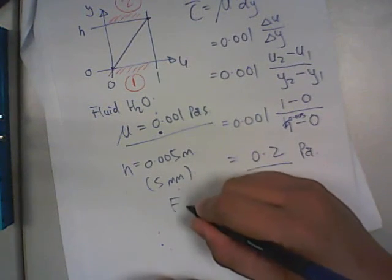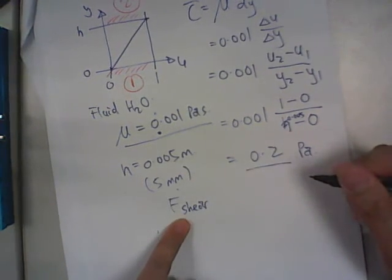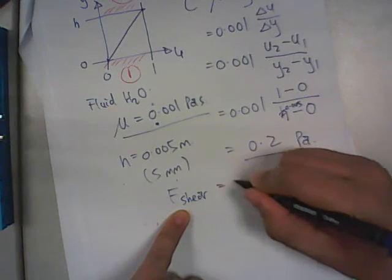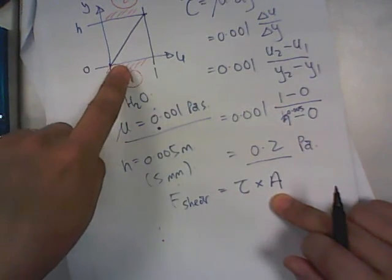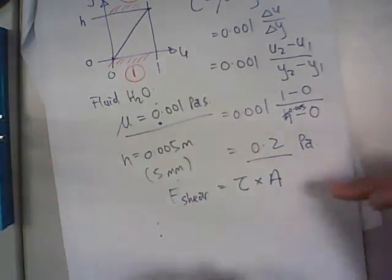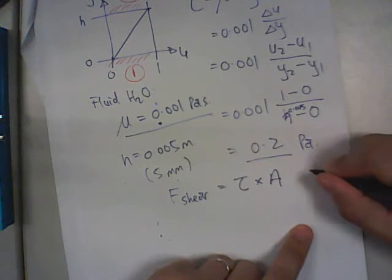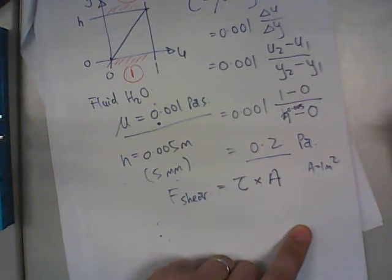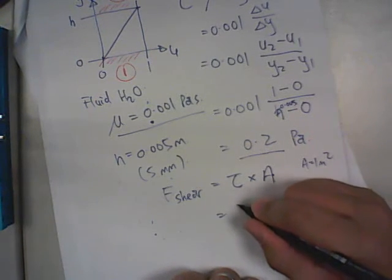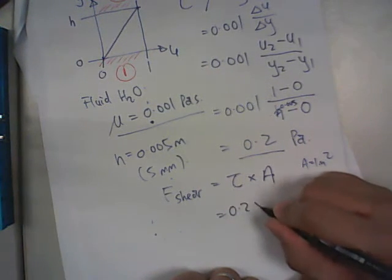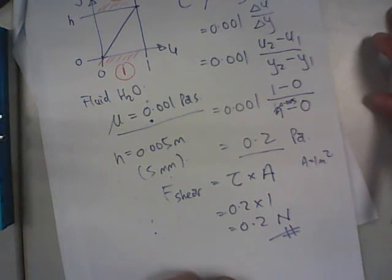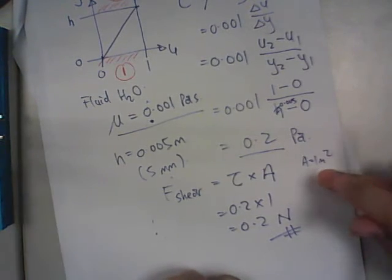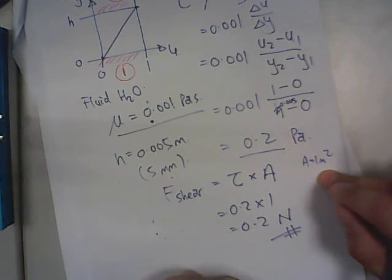And sometimes you will be required to find the shear force. It is basically the shear stress multiplied by the area of which this force is experiencing. How much force is it applied on a certain area? For example, if the area is 1 meter square, your shear force will be 0.2 times 1, which is 0.2 newtons. This is your shear force applied on 1 meter square of area.